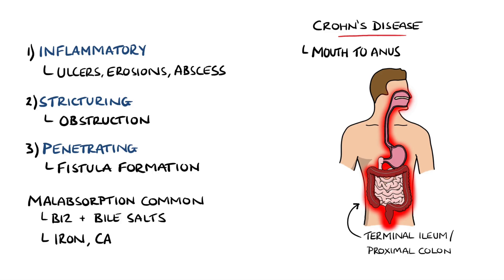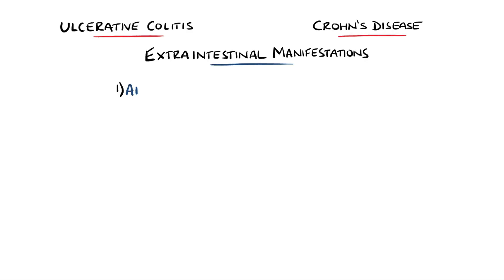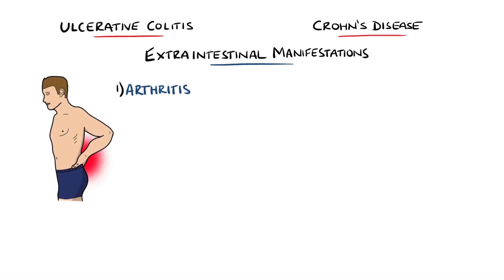Other deficiencies can include iron, calcium, and vitamin D. Extra-gastrointestinal manifestations are frequent. The most common is arthritis, with 30% of patients being affected. Mostly this is a peripheral arthritis, but in some cases can be ankylosing spondylitis.